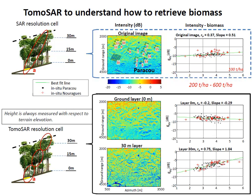Moving to the tomographic approach, we can now separate layer by layer. At the ground level, we see that radar reflectivity from 200 to 600 tons per hectare does not increase and sometimes even decreases — because less energy reaches the ground in denser forest. It is therefore reasonable not to expect good correlation at the ground layer. Since tomography allows us to examine each layer, we search layer by layer for the best correlation and find it at 30 meters.